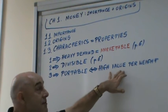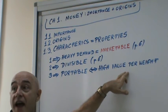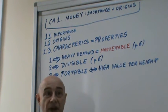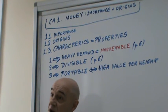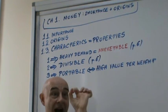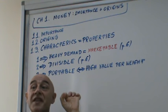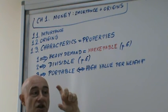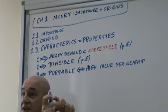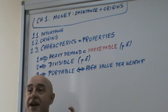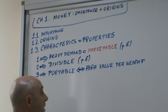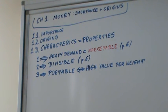So somehow if it's high value per weight, you carry with you a little bit and can make a relatively big payment. One ounce of gold is worth more than a thousand dollars, one thousand three hundred dollars. So a pack of cigarettes worth of gold is like twenty thousand dollars. A lot of money.